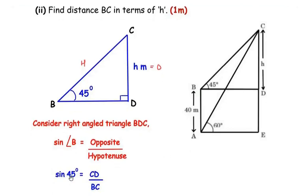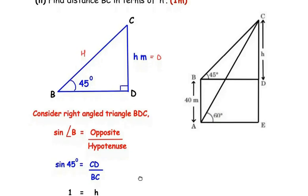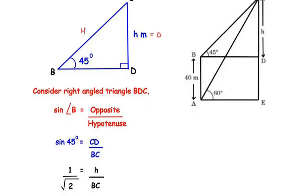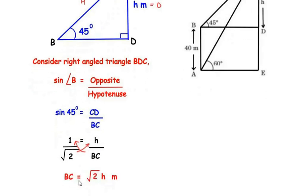Angle B is 45 degrees, so sin(45°) = CD/BC. sin 45° is a standard angle with value 1/√2. So 1/√2 = h/BC. Cross-multiplying gives BC = √2 · h meters. That is our answer for the second sub-question.